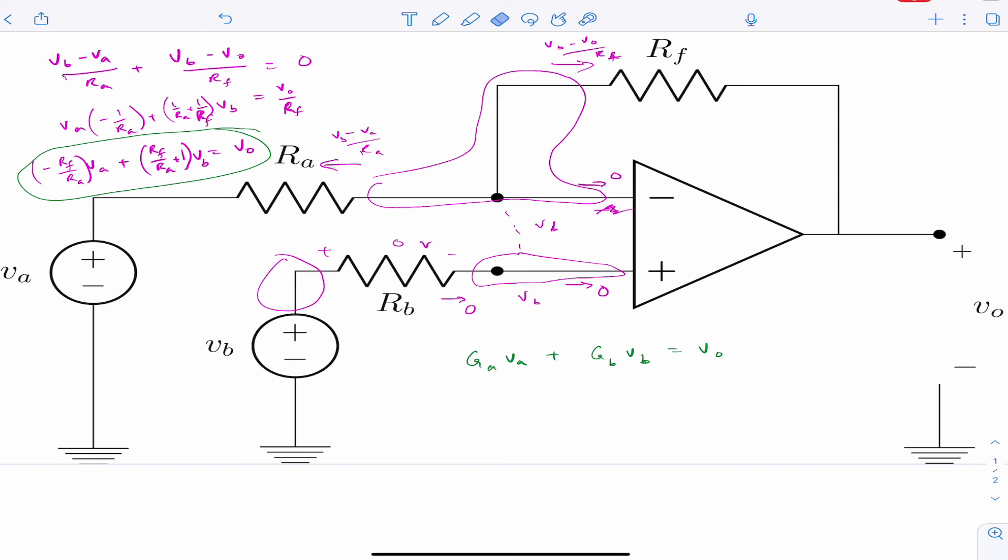And I'm going to replace these Gs. I actually like the symbol A better. A for gain. So there's a gain A and a gain B. Gain A is that, and gain B.